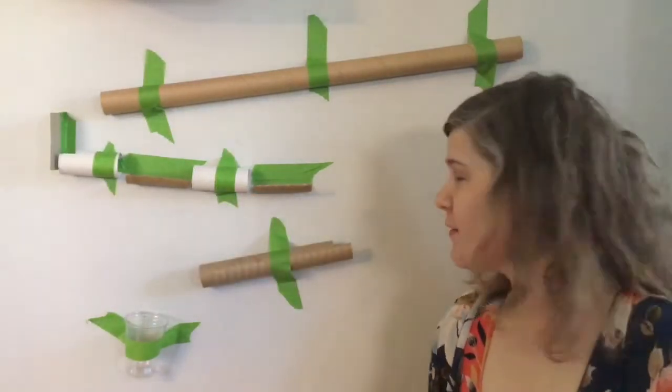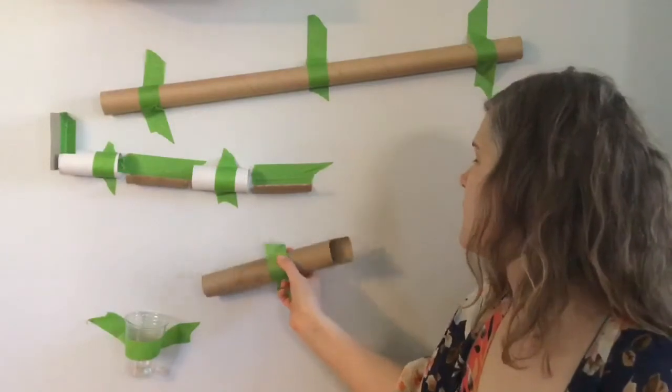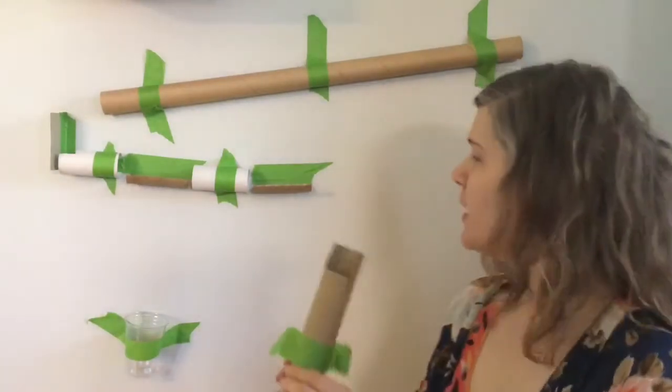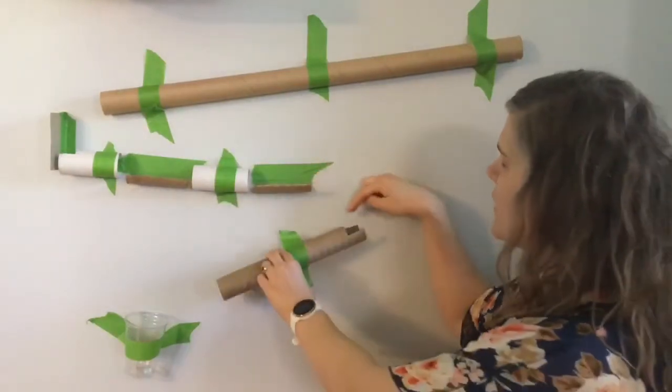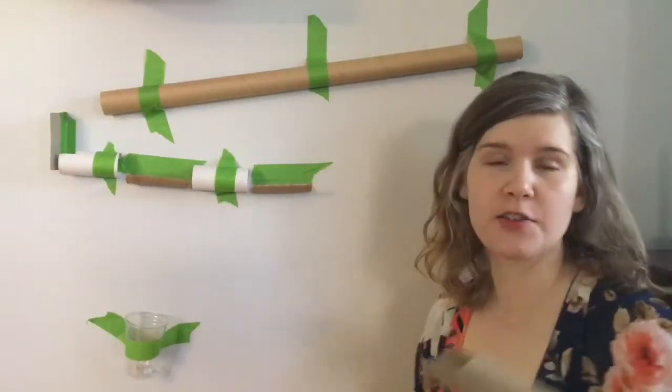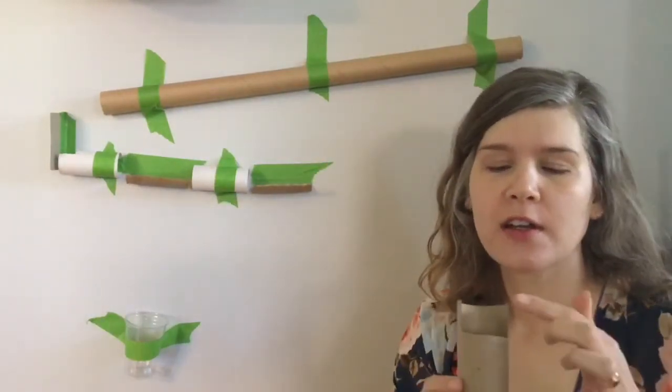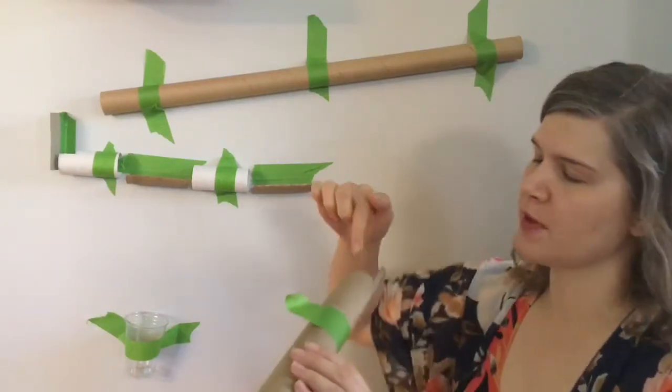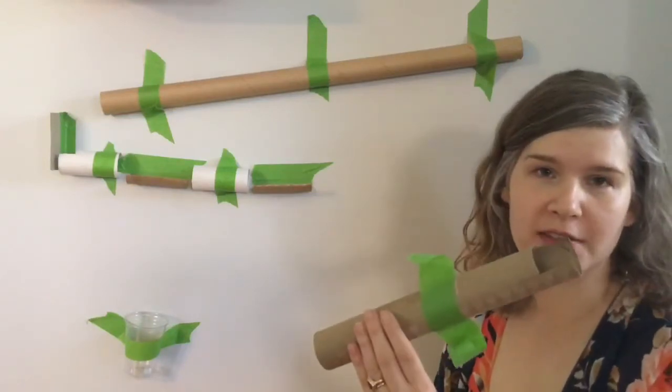One of my biggest pieces of advice: whenever you have a drop like this, the marble is rolling and then you want it to fall into a new tube—cut a little scoop out of the beginning of that tube so that the marble has a place to fall.